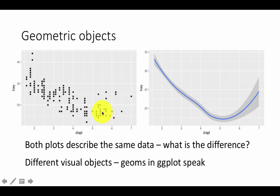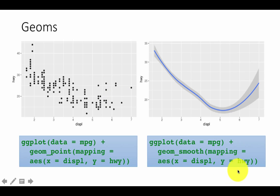The only difference is that they are using different visual objects to display the same data. So this is using one geom, the point geom. This is using a different geom, but they are displaying the same data. So in ggplot speak, we say that these two are using different geoms.